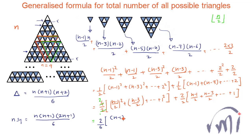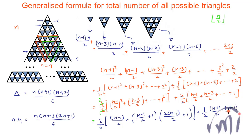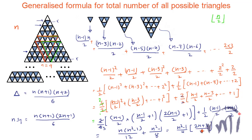After simplification, the total number of inverted triangles when n is odd equals n multiplied by n squared minus 1 divided by 12, plus n squared minus 1 divided by 8, which can be expressed as n squared minus 1 divided by 4, multiplied by 2n plus 3 divided by 6. So the formula for inverted triangles when n is odd is: (n² − 1)(2n + 3) / 24.